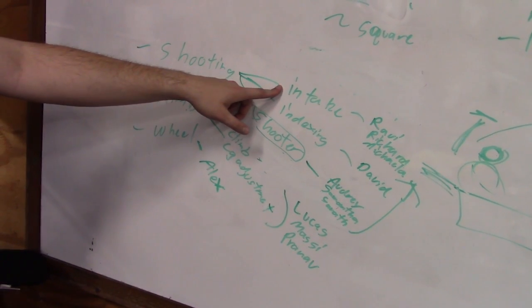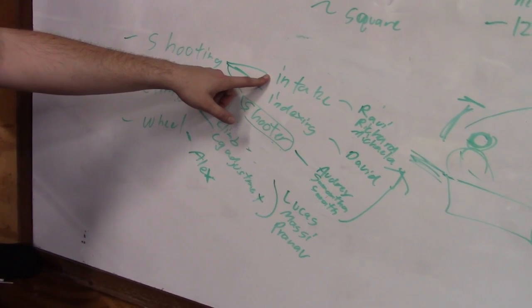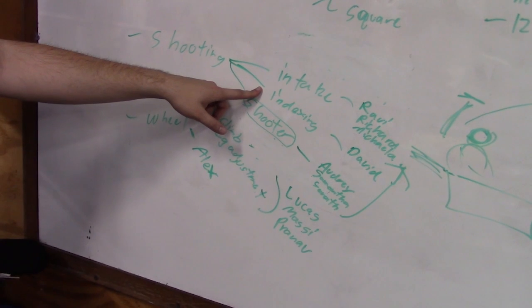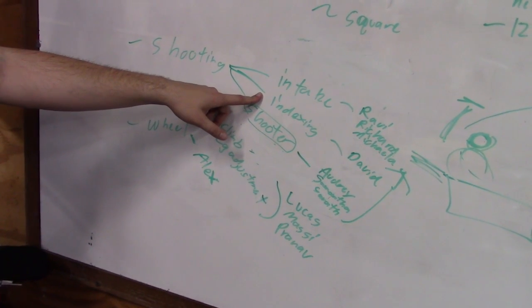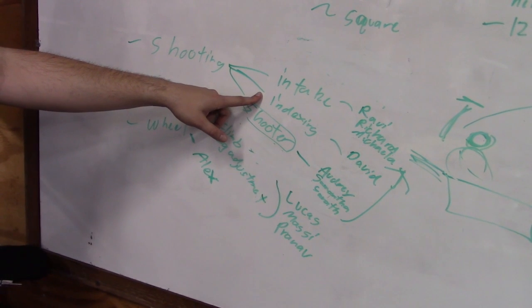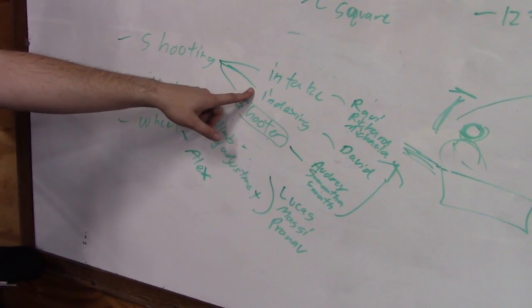We're going to have to then index the balls and we're going to have a shooting subsystem. So the intake we're looking at trying to get something pretty wide so that we can try to get multiple balls at once. Indexing is going to be a difficult challenge for all teams because you are allowed to hold five balls at once. We haven't quite decided how we want to index the balls but the gist of this subsystem is lining them up in some sort of order and getting them ready for the shooter.